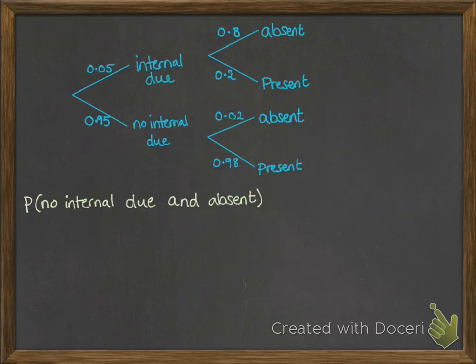We'll just copy this across to the next slide. Now what's the probability that he has no internal due and is absent? We need to look for the branch that will give us that outcome. We've got no internal due is a probability of 0.95.